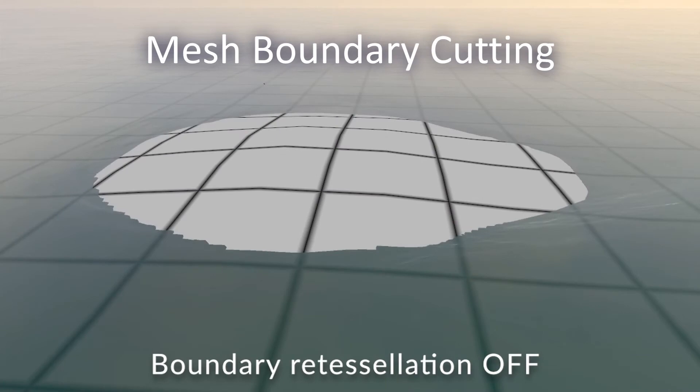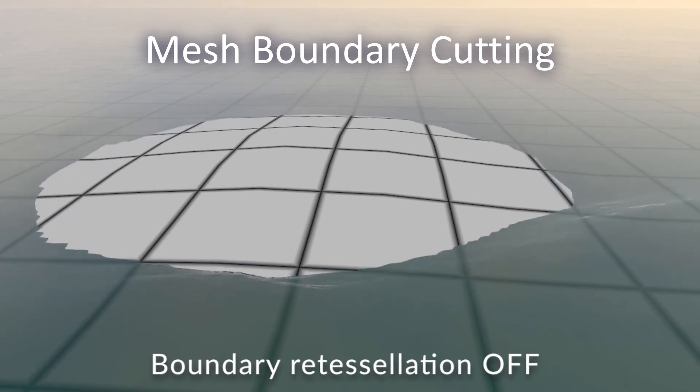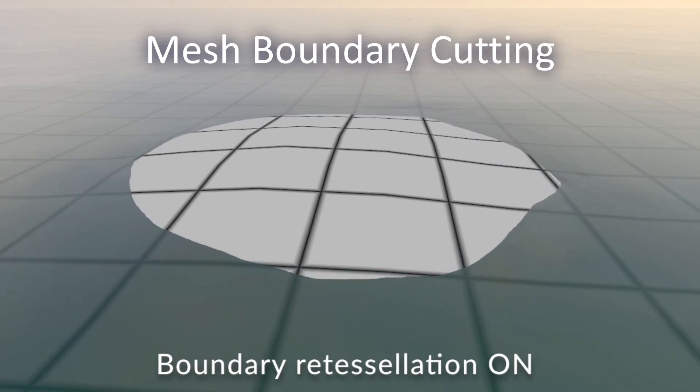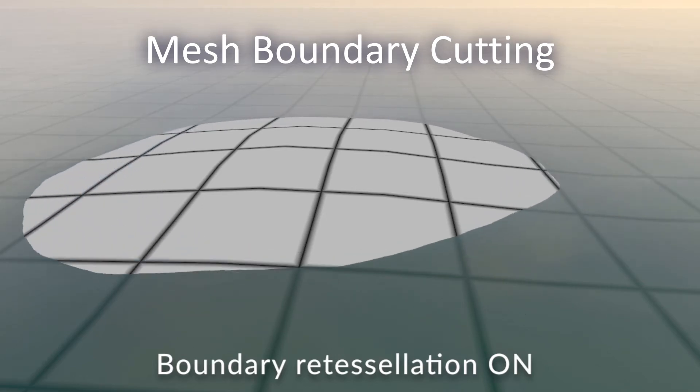However, the vertex projection just described causes the water boundary to become jagged, as seen here. Our solution is to clip and re-tessellate the mesh at the waterline, giving this much smoother appearance.